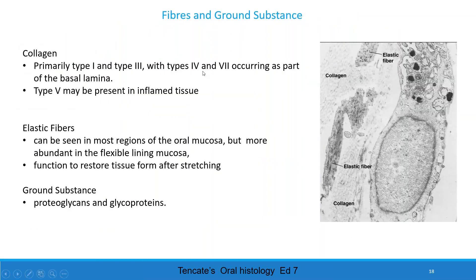The second component of the lamina propria is fibers. It contains collagen and elastin fibers. Collagen is mostly type 1, type 3, type 4, and type 7. Type 5 collagen can be seen in inflamed tissue. Elastic fibers are mostly seen in lining mucosa. They function to restore tissue after stretching. The ground substance is made up of proteoglycans and glycoprotein.